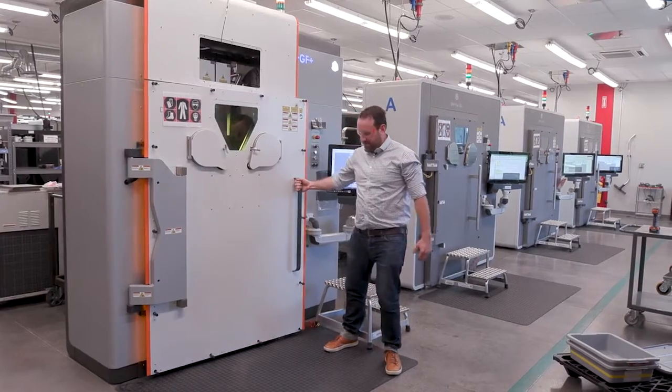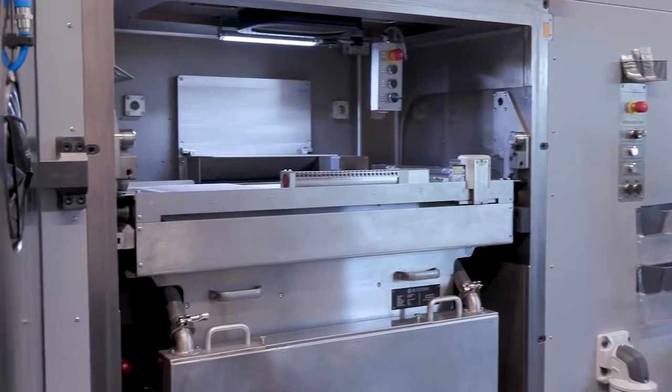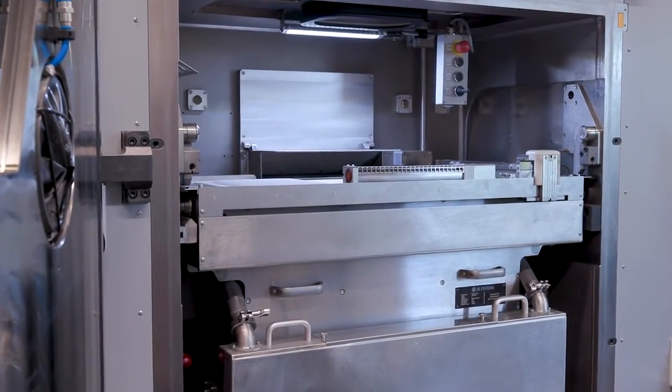The first thing that anybody will notice when they see one of the 3D Systems mid and large frame hardware systems is they're huge. They have three-quarter inch steel throughout this vacuum chamber. What this allows us to do is we do three cycles of vacuum purge, vacuum purge, vacuum purge.